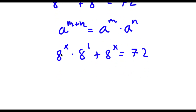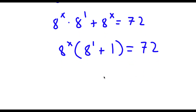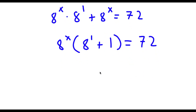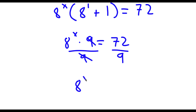Now because both terms have 8 to the power of x, I'm going to factor out 8 to the power of x. So I have 8 to the power of x times 8 to the power of 1 plus 1, which is equal to 72. 8 to the power of 1 is 8, and 8 plus 1 equals 9. So I have 8 to the power of x times 9 is equal to 72. Dividing both sides by 9, I'm left with 8 to the power of x is equal to 72 divided by 9, which is 8.